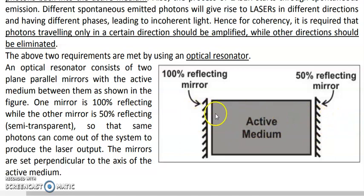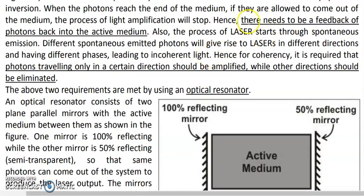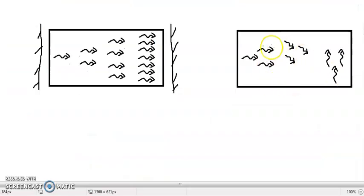So the optical resonator is a system of two plane parallel mirrors with the active medium between them, where one mirror is 50% reflecting and the other is 100% reflecting. The first requirement of the optical resonator is to provide feedback. But there is one more important reason why the optical resonator is required. We know the first photon required for the laser to start occurs through spontaneous emission, and spontaneous emission is a random process.